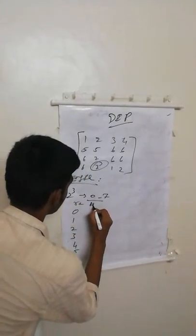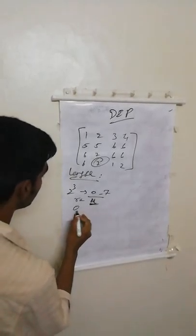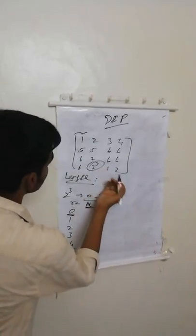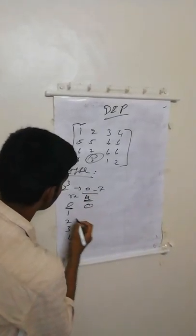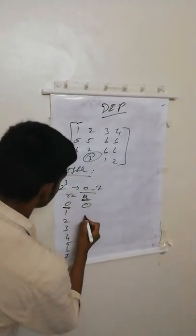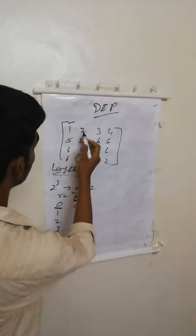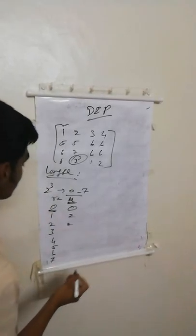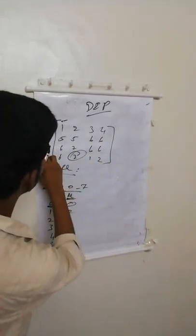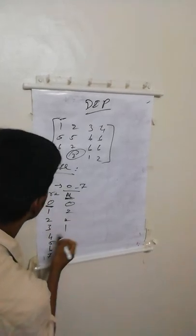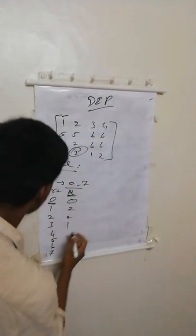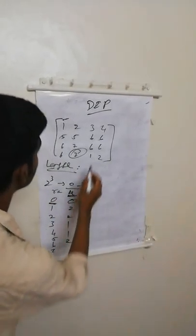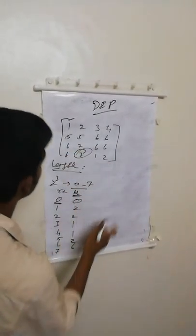Then we have to calculate n(k). n(k) denotes how many times each value occurs in the matrix. Here 0 doesn't occur, so its value is 0. The value 1 occurs 2 times. The value 2 occurs 2 times. The value 3 occurs 1 time. The value 4 occurs 1 time. The value 5 occurs 2 times. The value 6 occurs 6 times. The value 7 occurs 2 times.